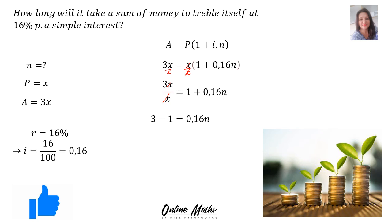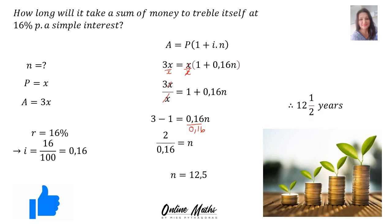Now the 1 moves across: 3 minus 1 is 2. Then I divide both sides by 0.16, and n = 12.5, which translates to 12 and a half years.